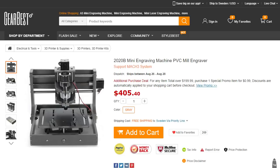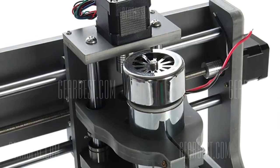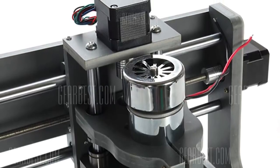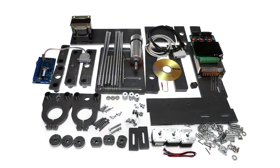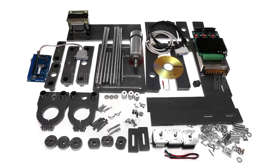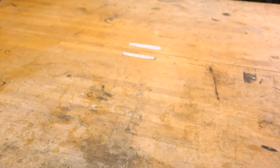The mill in question is the 2020B Mini Engraving Machine PVC Mill Engraver. Wow, that's a mouthful. It's a plastic frame CNC mill capable of milling foam, wood, plastics, wax, and even softer metals such as aluminum and brass. It comes delivered in a reasonably small albeit heavy box.